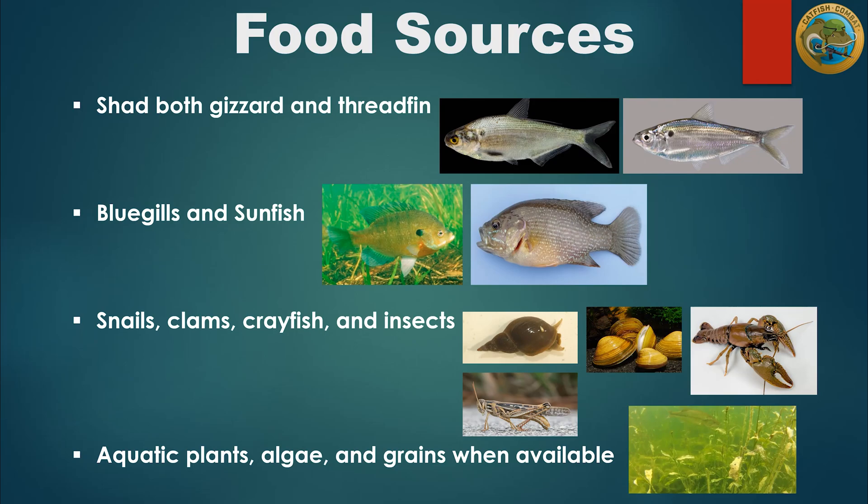The common food sources for channel catfish — their primary forage foods — are both gizzard and threadfin shad, blue eels and sunfish, snails, clams, crayfish, and insects. Additionally, they will eat aquatic plants, algae, and grains when young or if other food sources are scarce.